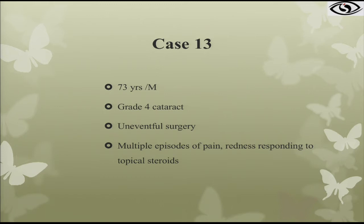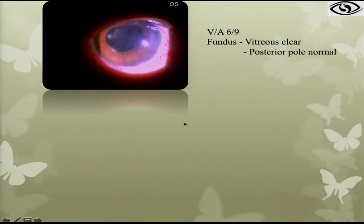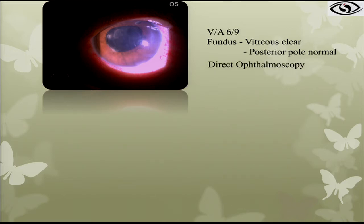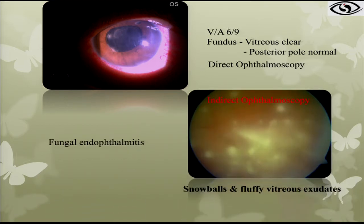Case 13: a patient who had grade 4 cataract surgery with multiple episodes of pain and redness responding to topical steroids. On presentation, minimal anterior segment inflammation was noted, posterior capsule was clear, and the posterior pole was reported as normal — but this was done with direct ophthalmoscopy only. When we did indirect ophthalmoscopy, we could see cotton ball appearances in the inferior vitreous. Whenever you have chronic endophthalmitis, always evaluate with indirect ophthalmoscopy, especially the inferior vitreous, as it gives clues to diagnosis.